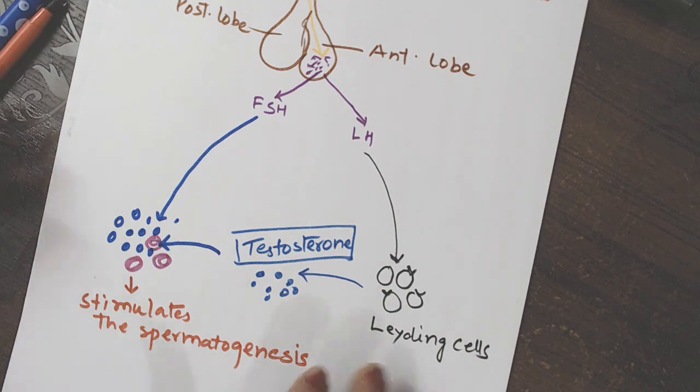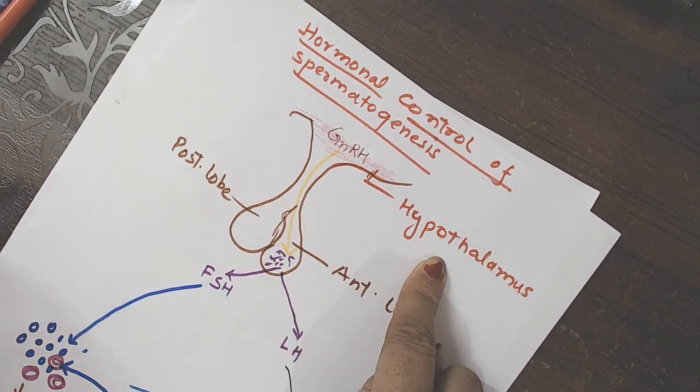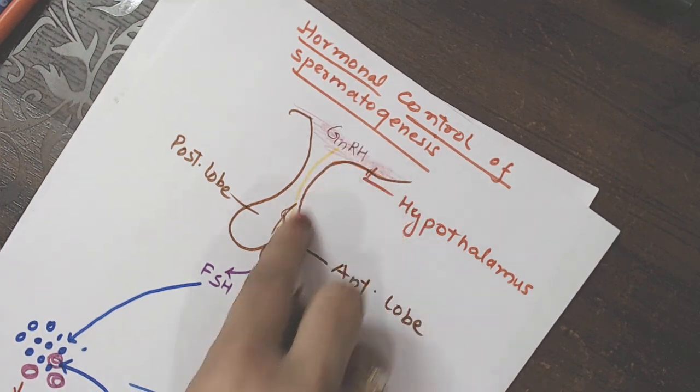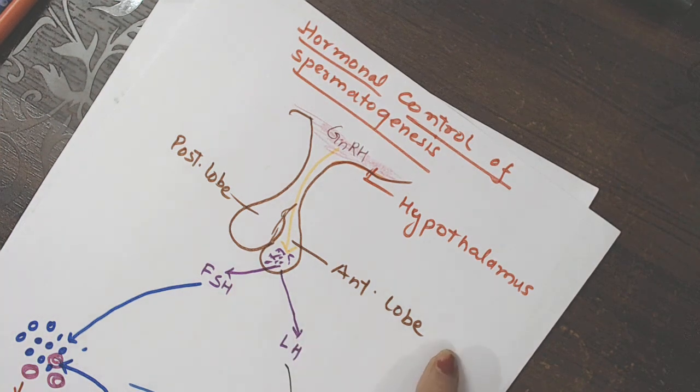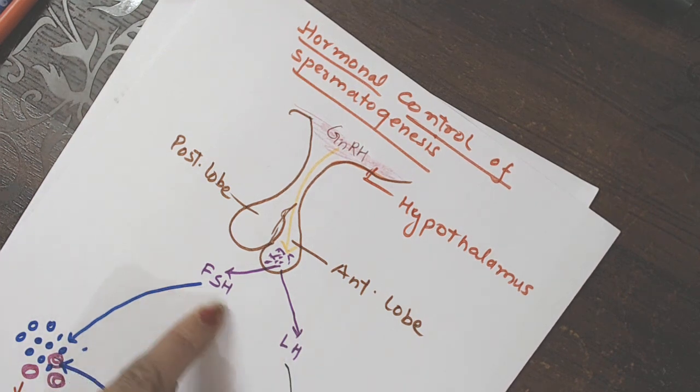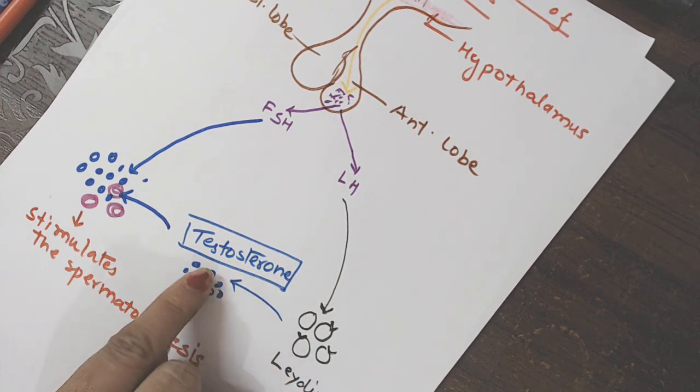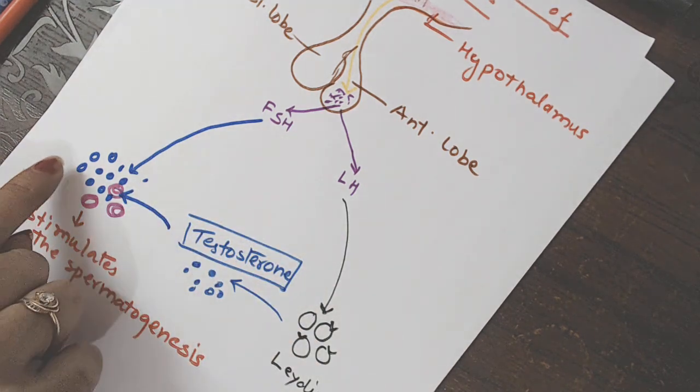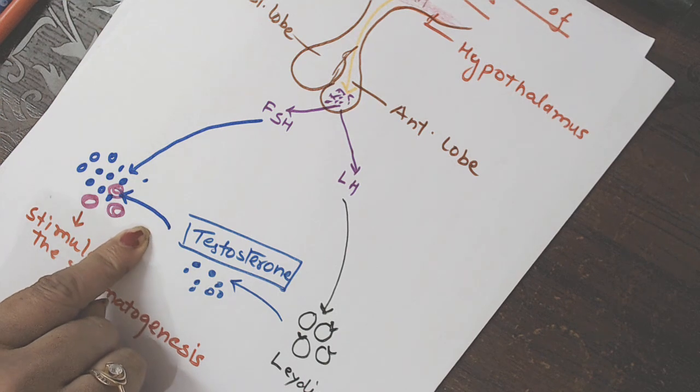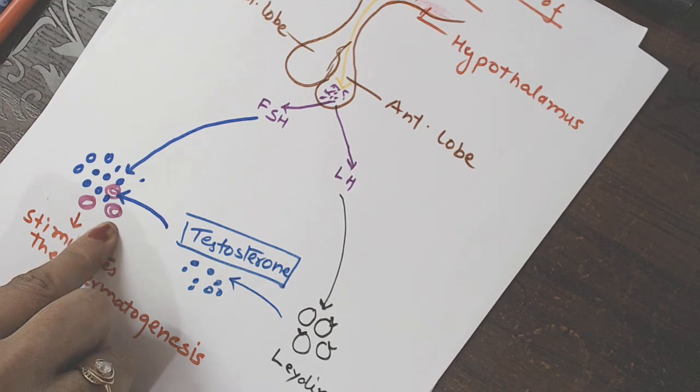Okay bacho I hope this hormonal control is clear in your mind. GNRH from hypothalamus is released and transported to anterior lobe of pituitary. Due to action of GNRH anterior lobe of pituitary secretes two hormones FSH and LH. FSH follicle stimulating hormone LH luteinizing hormone. Luteinizing hormone stimulates the Leydig cells and leading cells secrete testosterone, the primary male androgen. FSH acts on Sertoli cells.